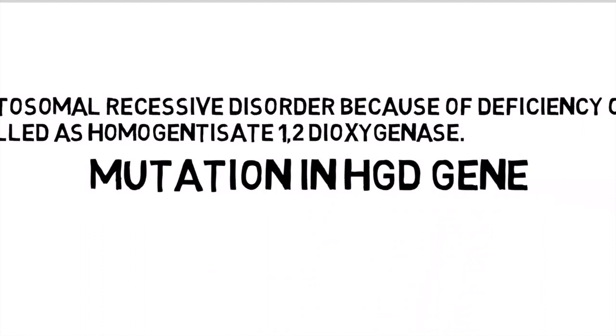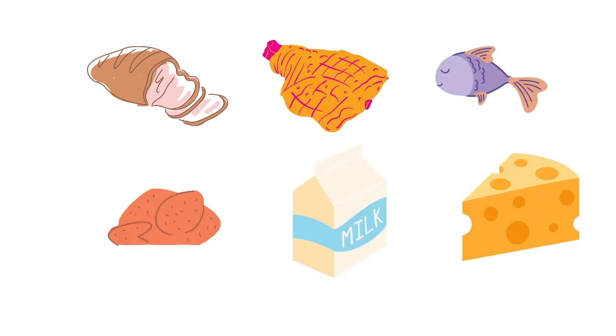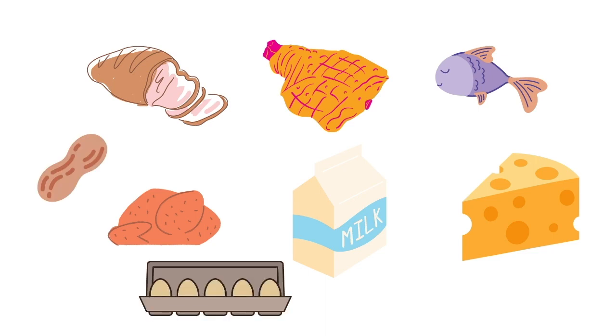Now let's talk about the details of pathophysiology. Tyrosine is an amino acid present in our diet in a variety of things such as beef, pork, fish, chicken, tofu, milk, cheese, beans, nuts, eggs, and whole grains. This tyrosine is metabolized in the liver.